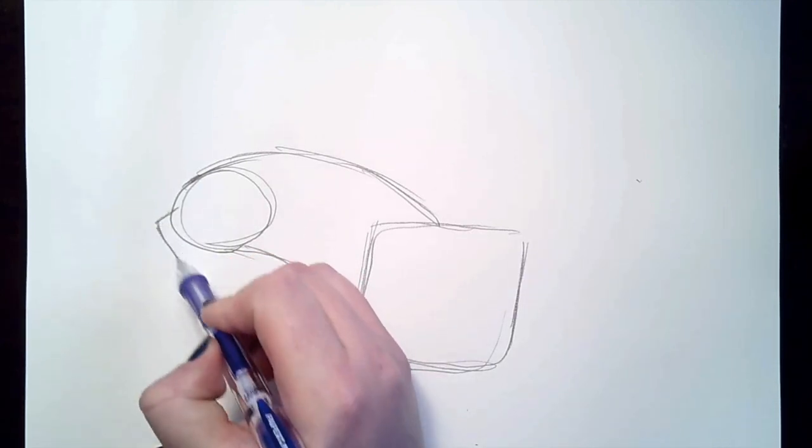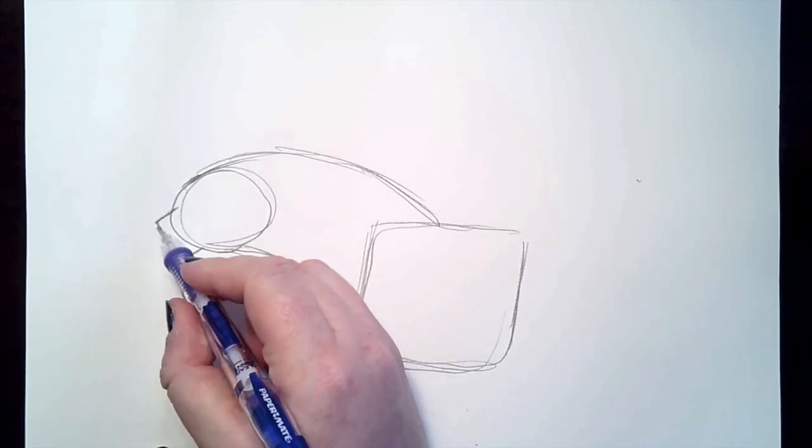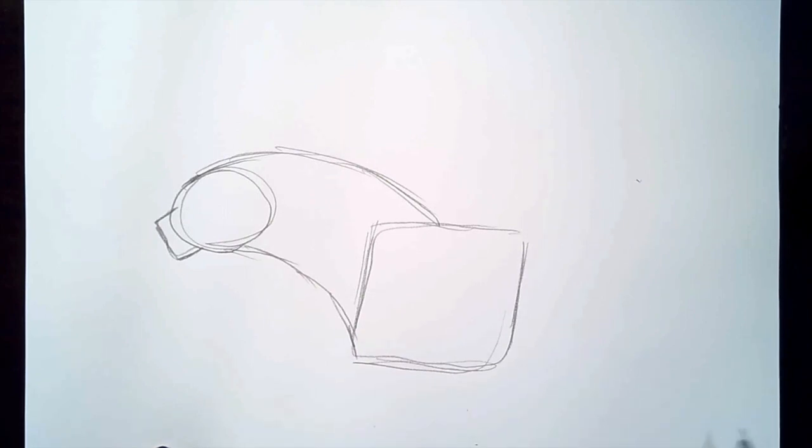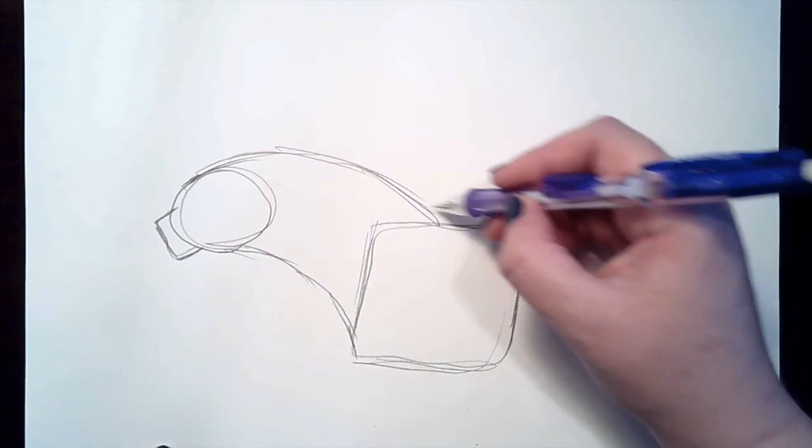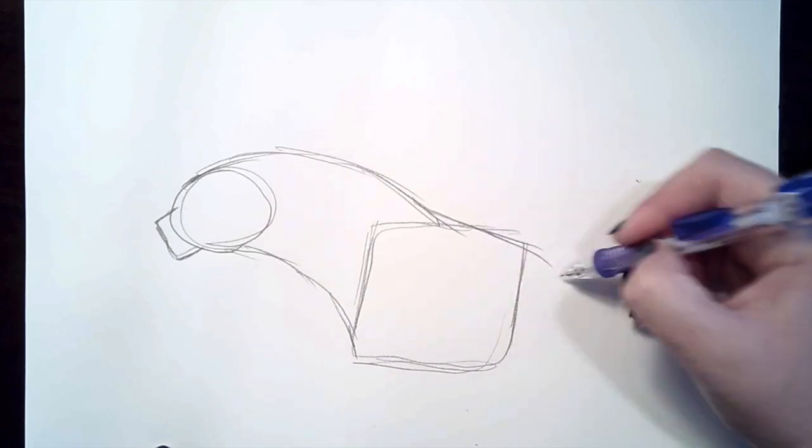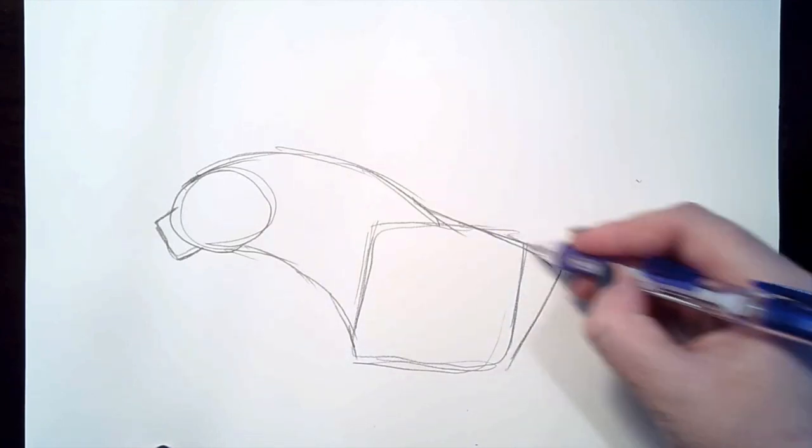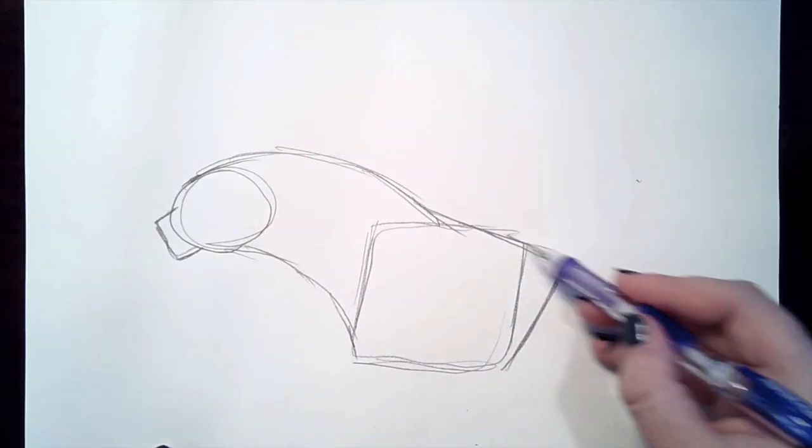For the face, you can add in a small rectangle for the snout. And then we're just going to shape off our square a little bit more to make it more of a slanted square. We'll give it a corner down here.